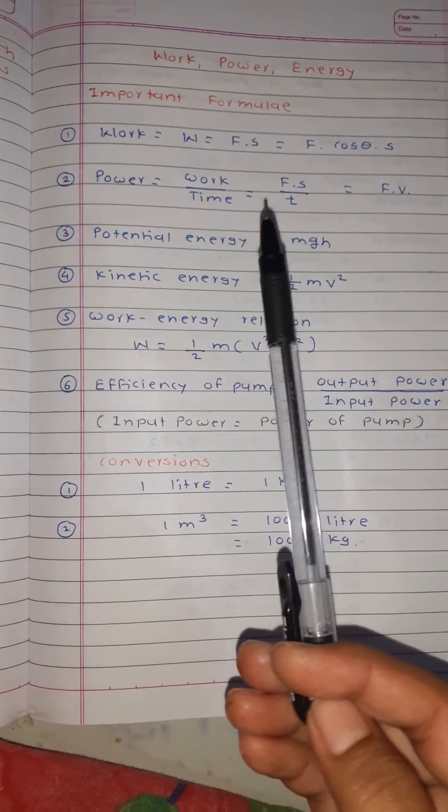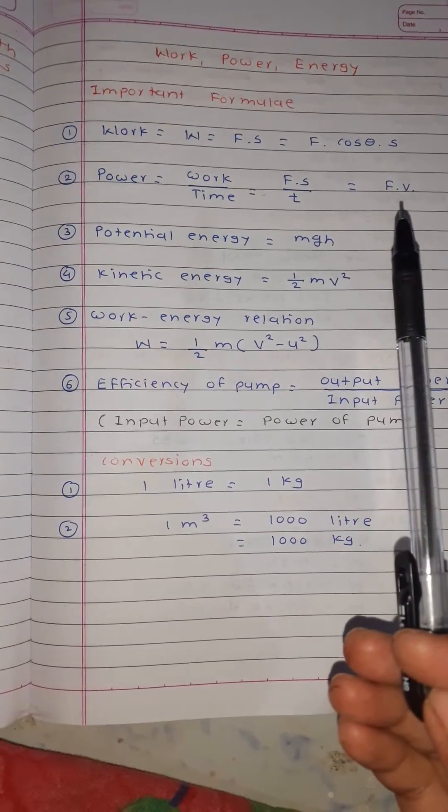Power = work / time, that is F × S / T = F × V where V is velocity.